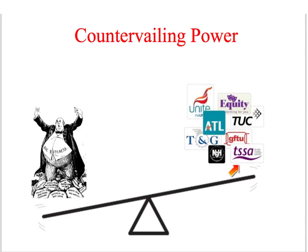The technical term for this process is countervailing power. The power of big business is not absolute — it's checked by the countervailing power of other groups, including trade unions, environmental groups, and a range of other pressure groups.